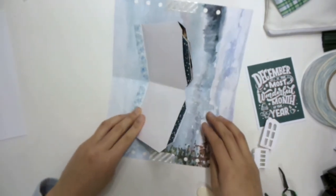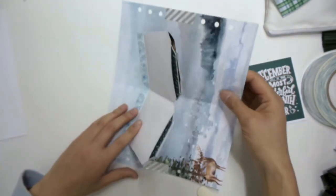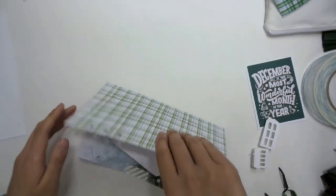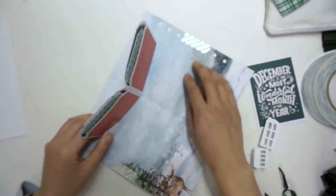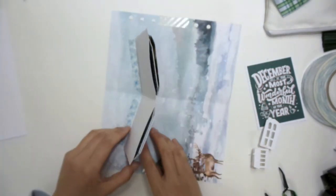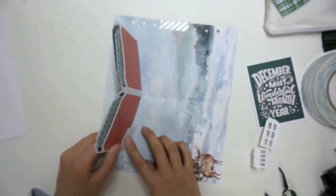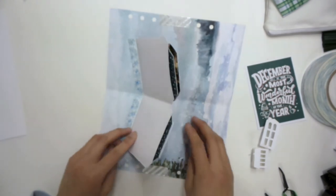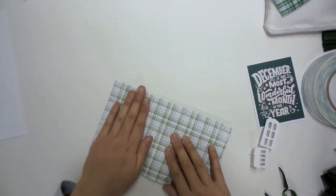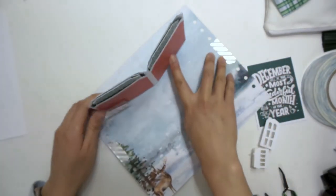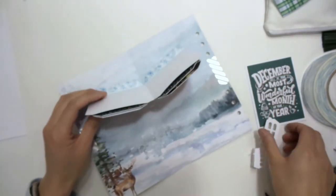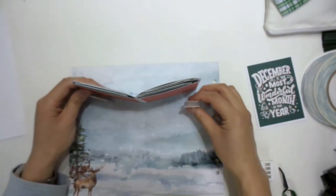And so when you fold it flat, it should just be able to fold like so. There might be a bit of resistance because the acetate is a bit thick. So if you don't want it to have that much resistance then you can use vellum would be another option as well. So we're going to do the next side here.